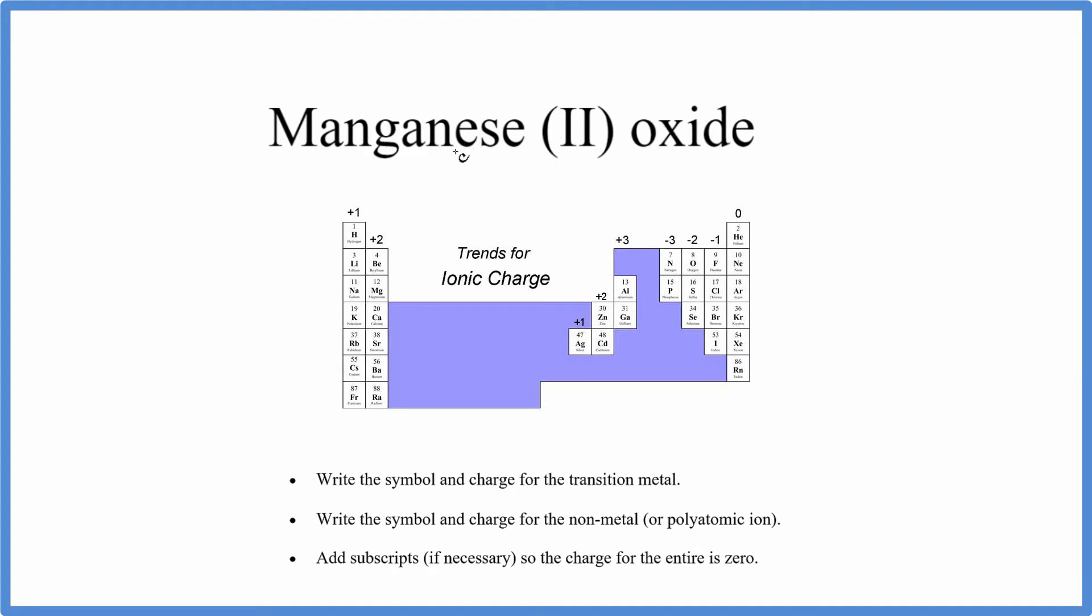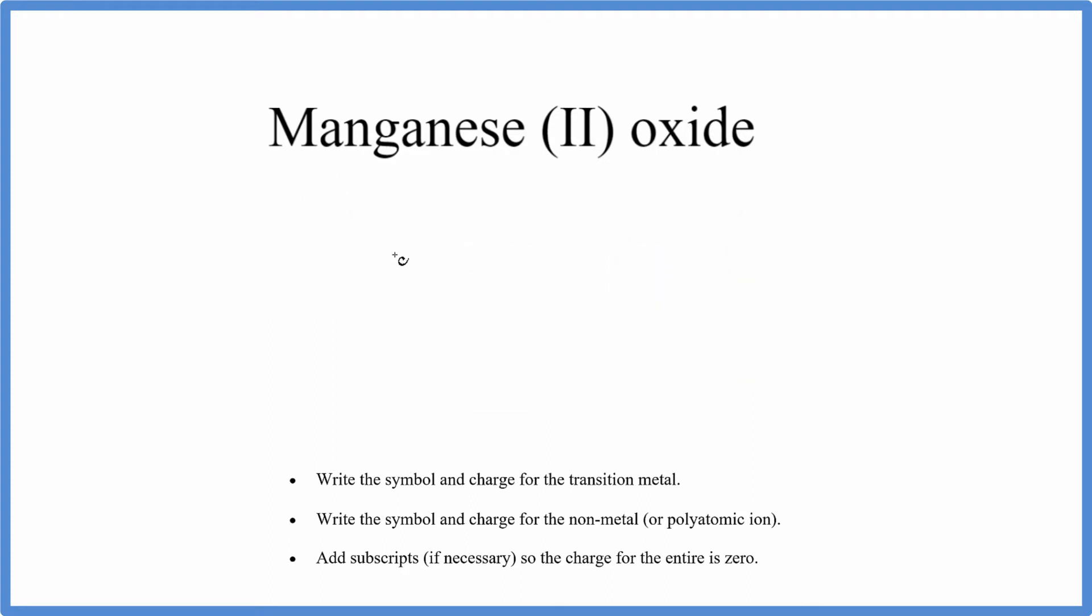Manganese is also a transition metal, so this 2 here tells us a lot of information. Go to the periodic table, the symbol for manganese is Mn.